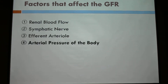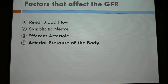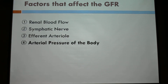Factors that commonly affect the GFR are: renal blood flow, sympathetic nerve, and the efferent arteriole pressure of the body. First, when the renal blood flow slows down, the GFR decreases. Second, the sympathetic nerve — if there is severe stimulation of the sympathetic nerve, the GFR decreases a lot, temporarily. Third, the efferent arteriole — when the efferent arteriole contracts, the GFR increases. And last, arterial pressure of the body — when the arterial pressure increases, the GFR also increases.